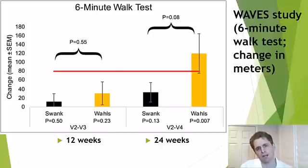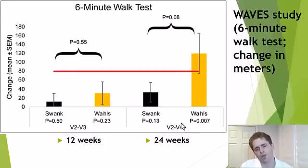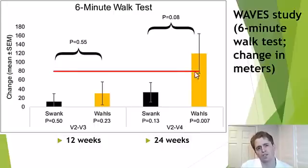This is an example of the six-minute walk test in a clinical trial — the WAVES trial done by Dr. Terry Wahls, comparing the Wahls protocol (a paleo-type diet) versus the Swank diet (a low-fat diet). After 24 weeks, people doing the Wahls diet walked a little bit further over six minutes, though the difference was modest. If you have questions or thoughts about outcomes in MS research, please post in the comments below, and let me know if you have ideas for other videos.